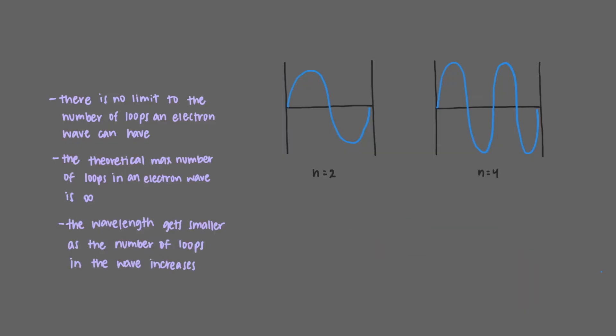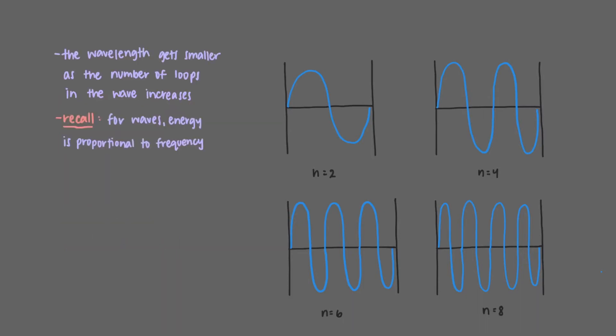That's right, the wavelength gets smaller as the number of loops in the wave increases. So as we keep adding waves, the wavelength of the wave keeps getting smaller and smaller. But recall that for waves, energy, which is proportional to frequency, is inversely related to the wavelength of a wave.